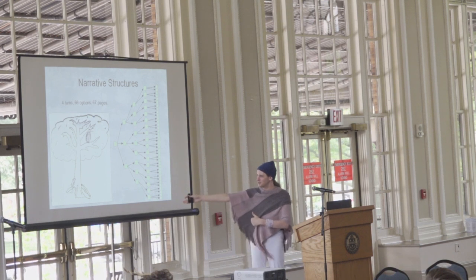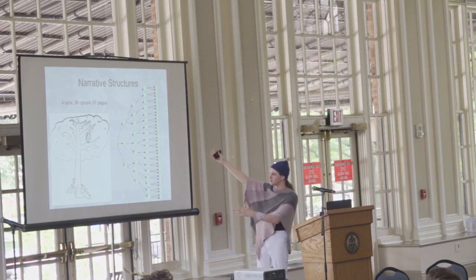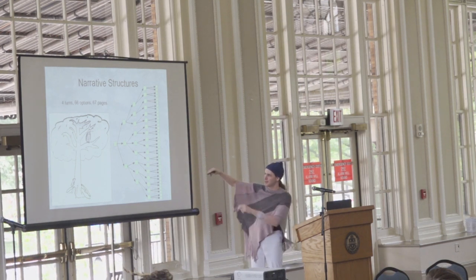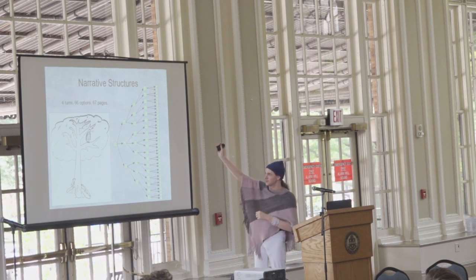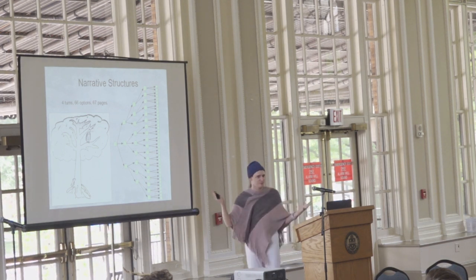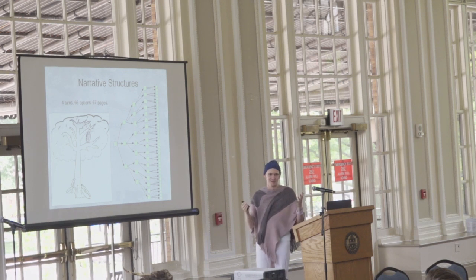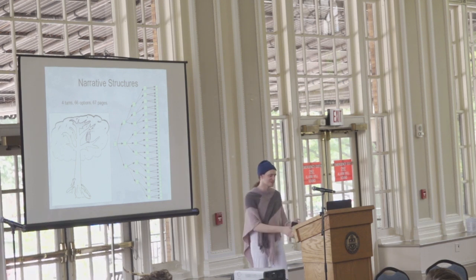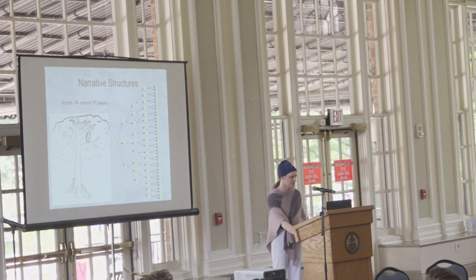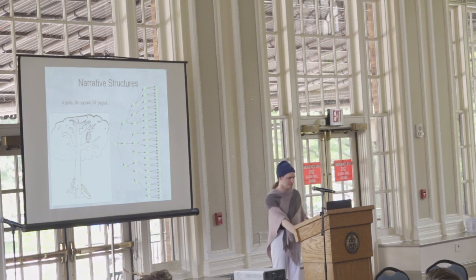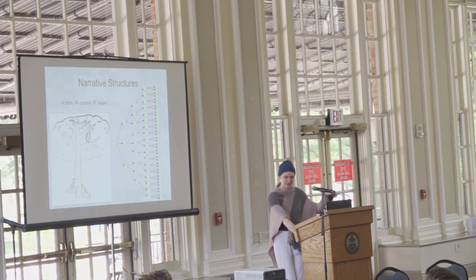Here we have 67 nodes worth of content that we would have to write — three options per node the first two turns, two per node the second two turns, and there's only four turns worth of game but 67 pages worth of content, so that's not really feasible. There are a lot of ways game designers try to solve this problem. A storylet system combines a lot of these methods together, so I'm going to go over the methods and then talk about how a storylet system combines them.